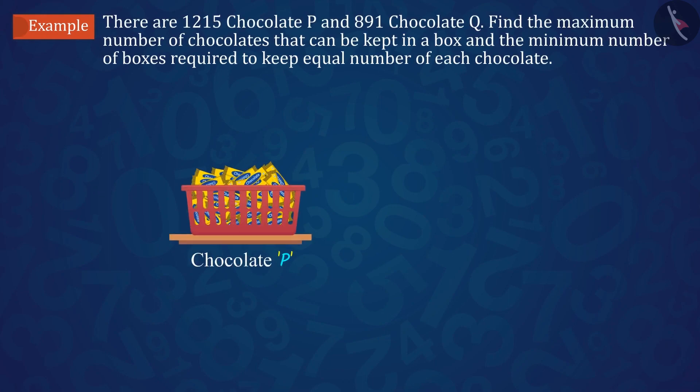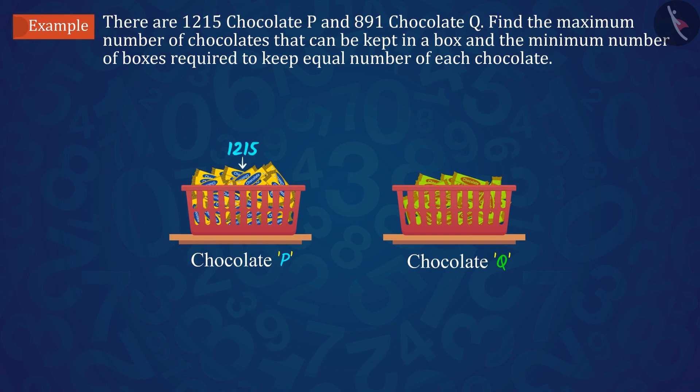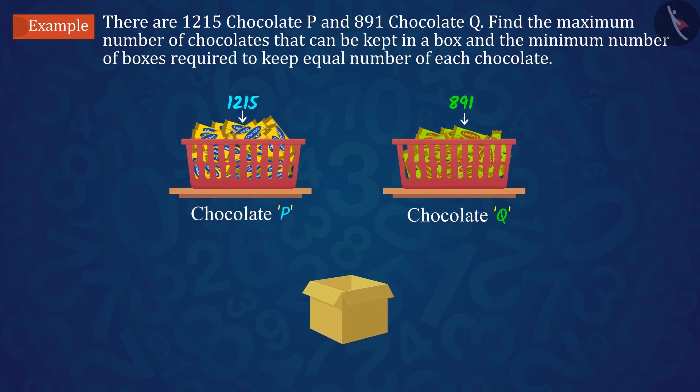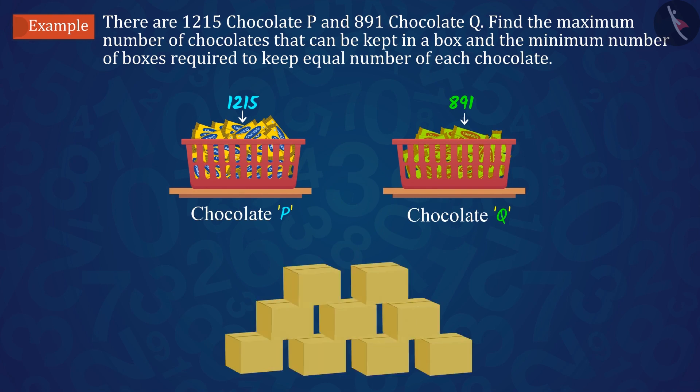The number of chocolates P and chocolate Q are 1215 and 891 respectively. What is the maximum number of chocolates that can be kept in a box, and how many minimum boxes are required to keep equal numbers of each chocolate?